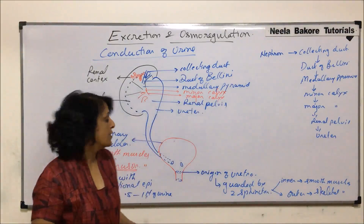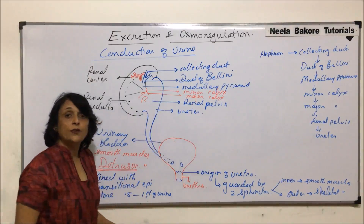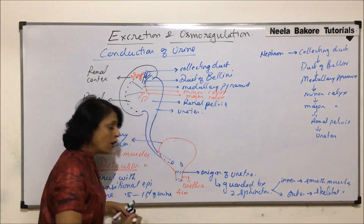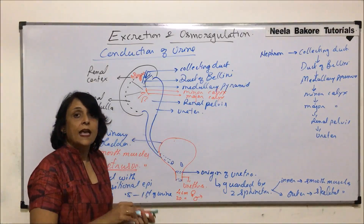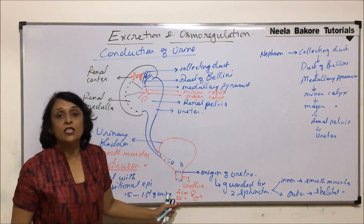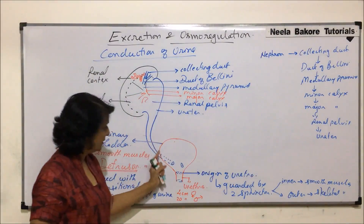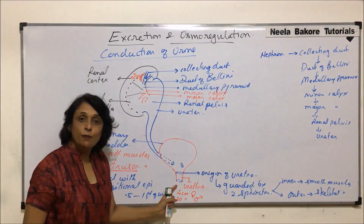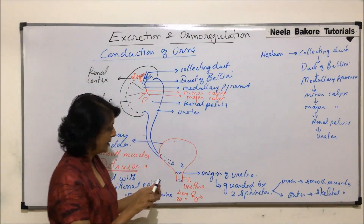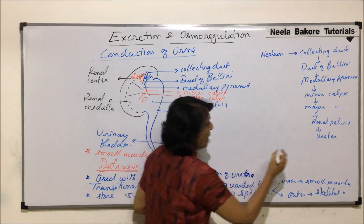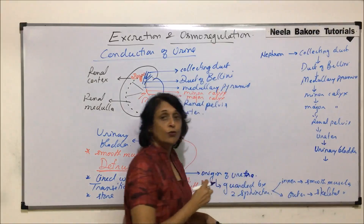There are two sphincters guarding the urethra. The urethra is 4 centimeters long in females and 20 centimeters long in males. In males it also acts as a common ejaculatory duct. After the ureter, urine comes into the urinary bladder and is eliminated through the urethra.